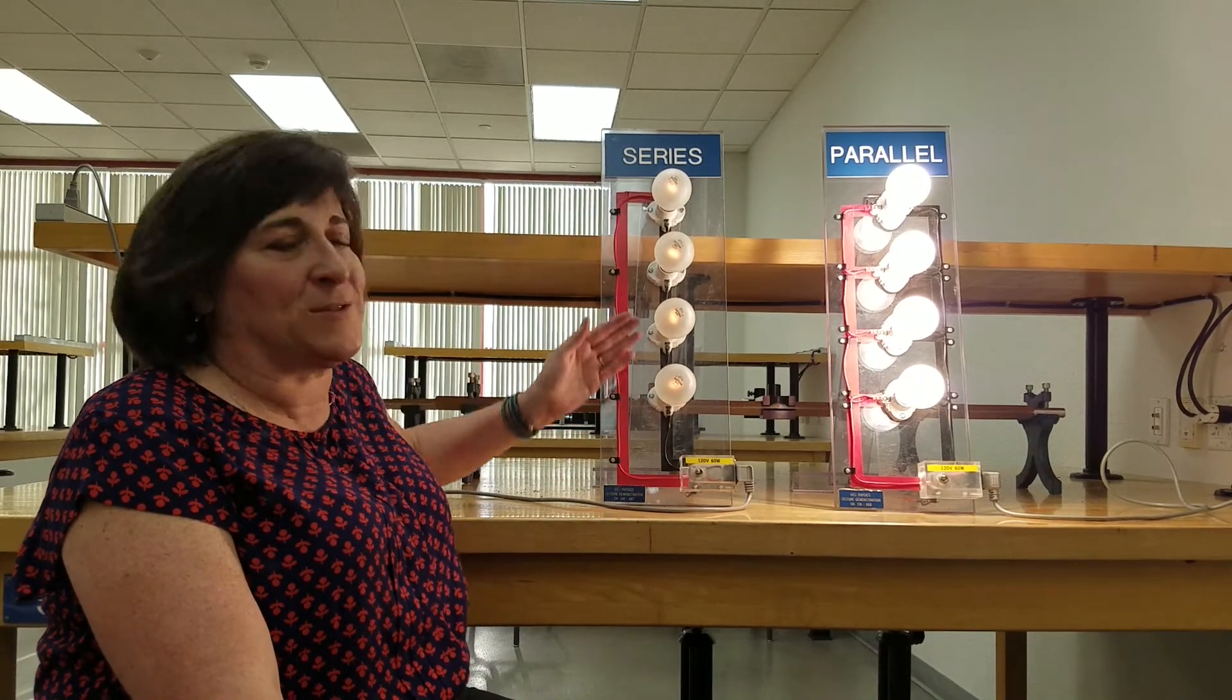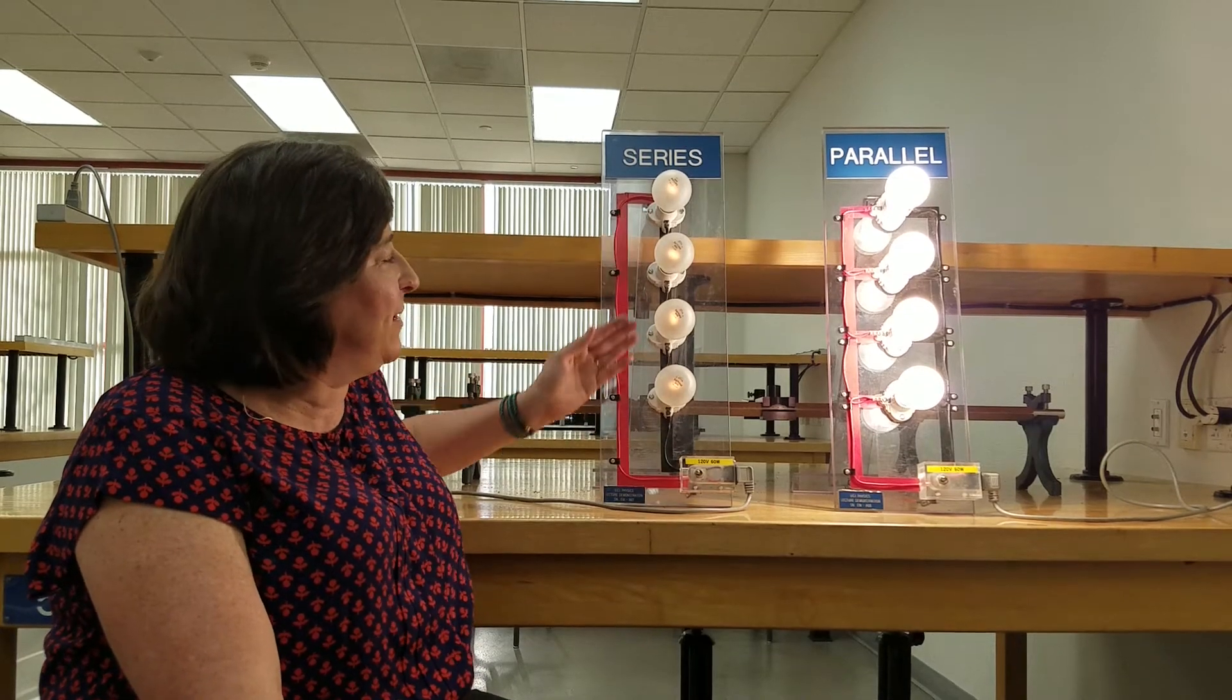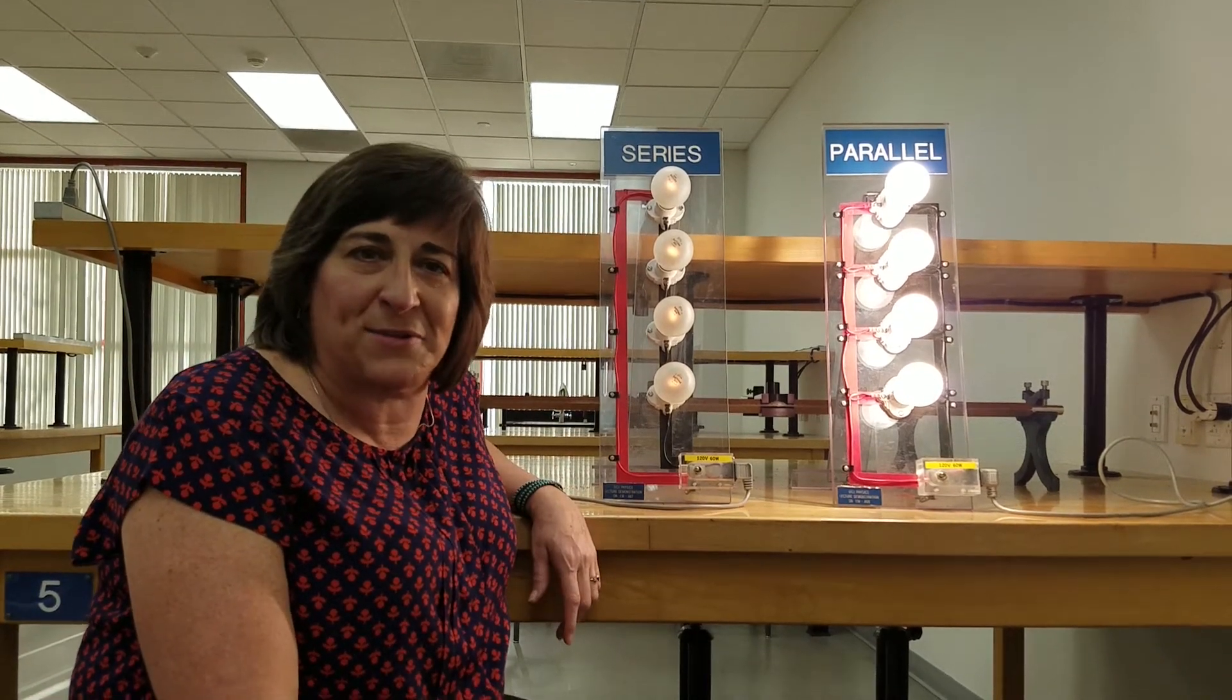Here, the resistance is fairly high, so there's only a little bit of current going through there, so these bulbs are much dimmer.